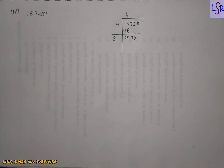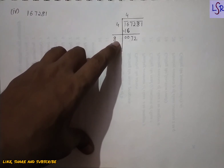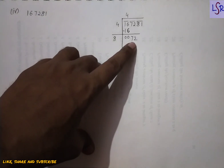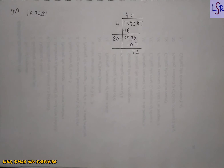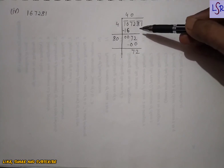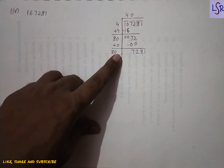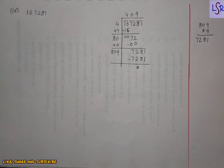We need to write something after 8 and multiply by the same number. If we write 1, it becomes 81, and 81×1=81 which is greater than 72. So we can't even write 1; we write 0. Since 80×0=0, we get remainder 72 and copy down the next digits, adding 0. Then trying 9: 809×9=7281, which matches exactly. So 409 is the square root of 167281.